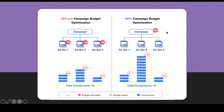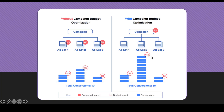In the second chart on the right, the campaign now has a $30 a day budget at the campaign level rather than the ad set level. Facebook divvies out the budget between ad sets based on conversion performance. Ad set one got $7 but still got three conversions; ad set two got $18 and generated 10 conversions; and ad set three got $5 and generated two conversions.